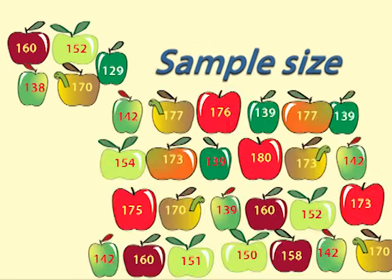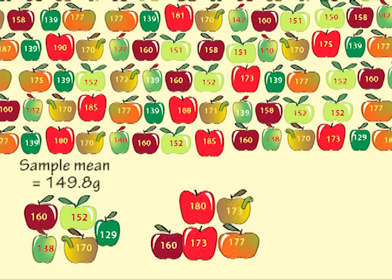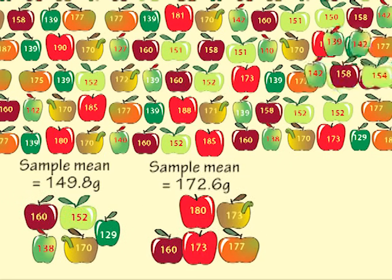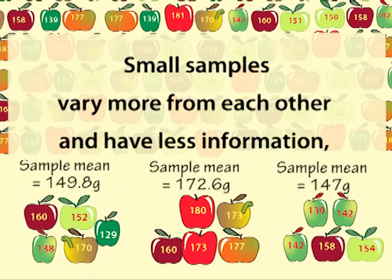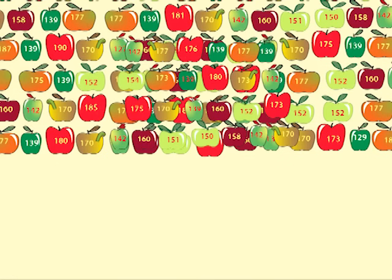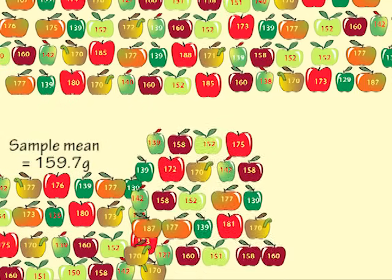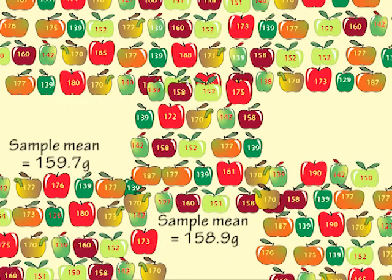Sample size also affects the width of a confidence interval. If we take a small sample, we don't have much information on which to base our inference. Small samples will vary more from each other. There is more variation due to sampling, or sampling error, with a small sample. In larger samples, the effect of a few unusual values is evened out by the other values in the sample. Larger samples will be more similar to each other. The effect of sampling error is reduced with larger samples.